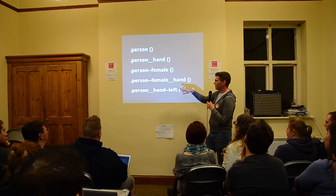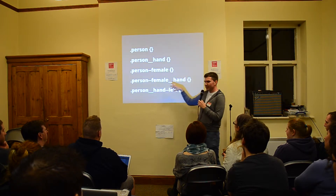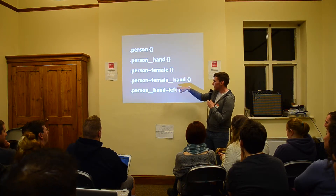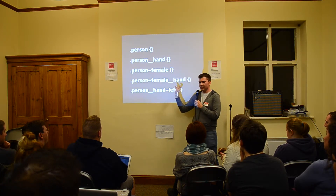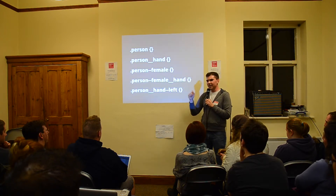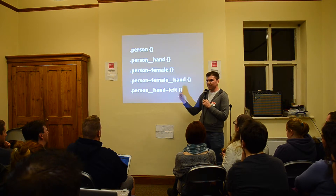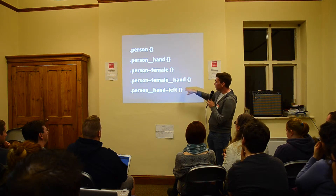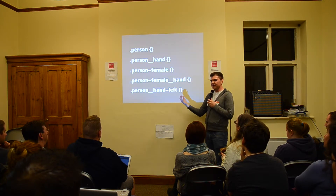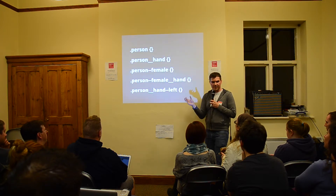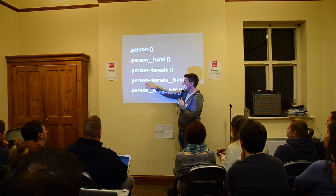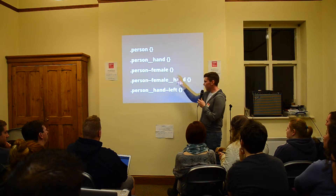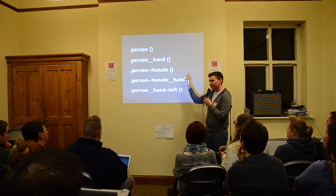The reason you use double underscores and double dashes — while that possibly looks like it's breaking the rules — is so you could have dashes and underscores within the block name itself. For example, you could have news-article as a block name, and then double underscore it for an element. Also note that it doesn't have to be block, element, modifier in that order — it just has to be wherever it exists. So a female person is a modifier of person, so it lives with person, not at the end — because it's a modifier of person, not a modifier of hand.